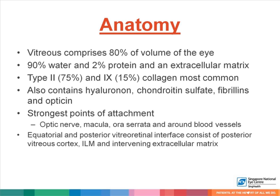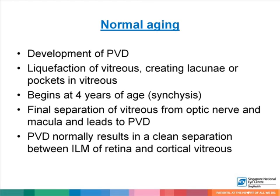The equatorial and posterior vitreoretinal interface consists of the posterior vitreous cortex, internal limiting membrane, and the intervening extracellular matrix. In normal aging, the patient develops a posterior vitreous detachment. This starts with liquefaction of vitreous, creating lacunae or pockets, and usually begins at about forty years of age. The final separation of the vitreous from the optic nerve and macula leads to PVD, which normally results in a clean separation between the ILM of the retina and the cortical vitreous.